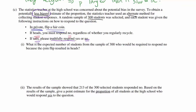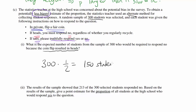Part i: What is the expected number of students from the sample of 300 who would be required to respond no because the coin flip resulted in heads? We have 300 students, and the expected proportion of heads is one half, so our answer is 150 students.